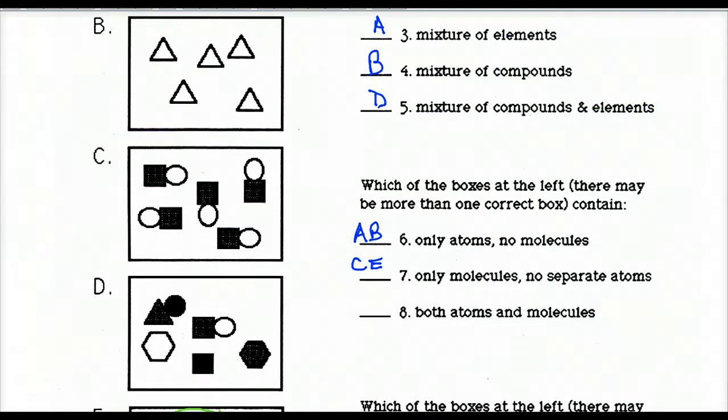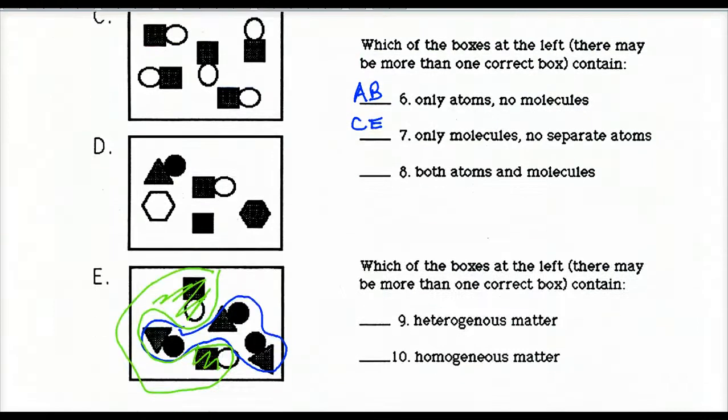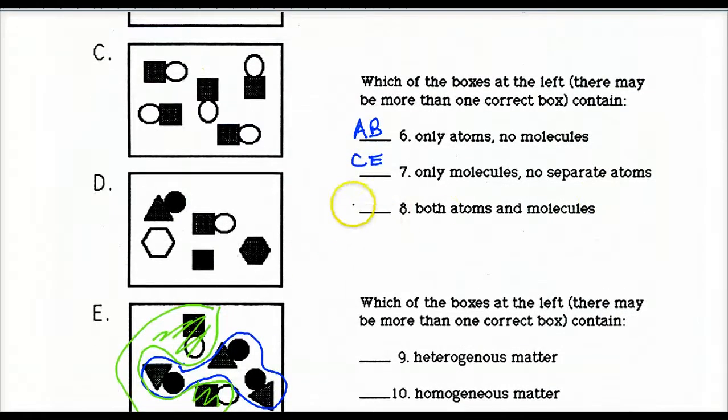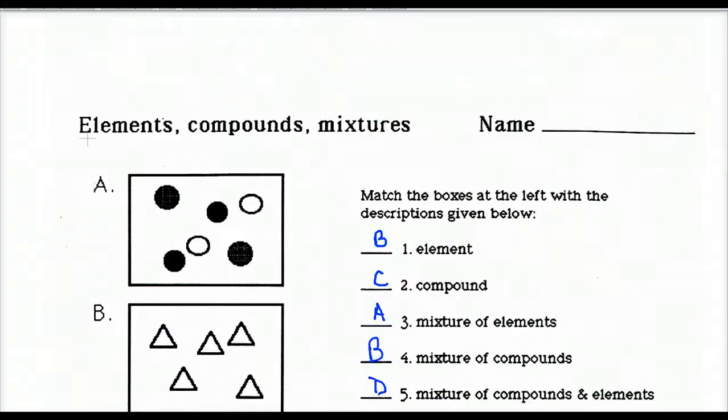Both atoms and molecules. That's only one. That's D. Again, the molecules are bonded together. Two different atoms chemically bonded. And the atoms are free.